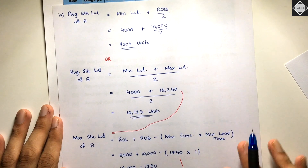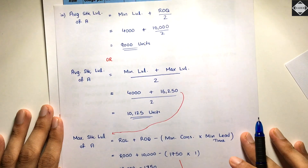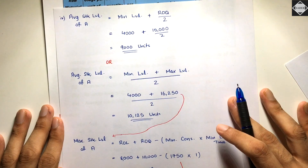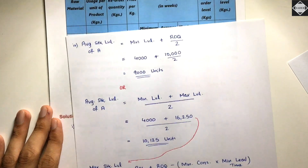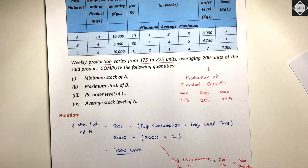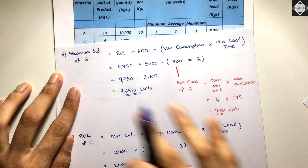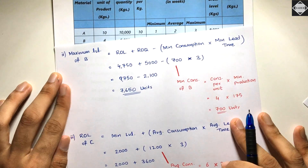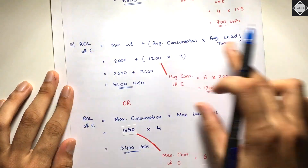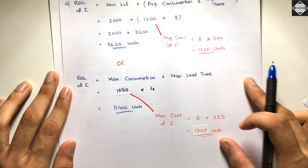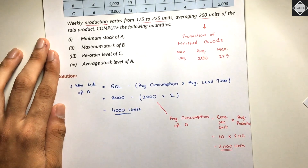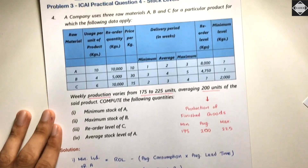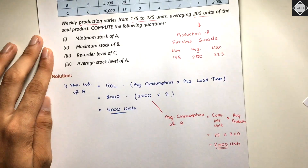That is it for this video. You can take screenshots of the slides shown. We also covered maximum level of B and reorder level of C from the second formula. See you in the next video — bye.